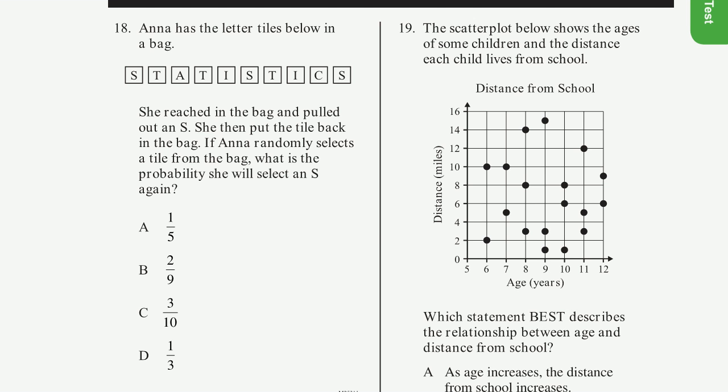Problem 18. Anna has the letter tiles below in a bag. It's very interesting. It just happens to spell out statistics. She reached in the bag and pulled out an S. She then put the tile back in the bag. OK, so all of them are still in the bag. If Anna randomly selects a tile from the bag, what is the probability she will select an S again?